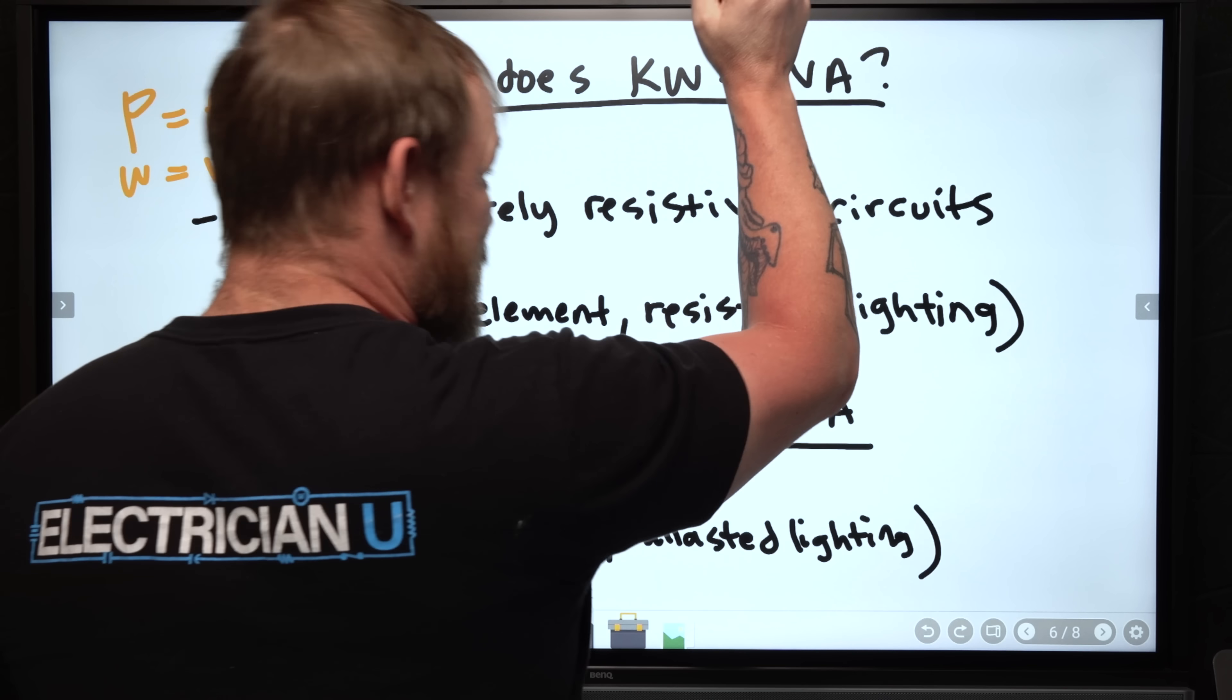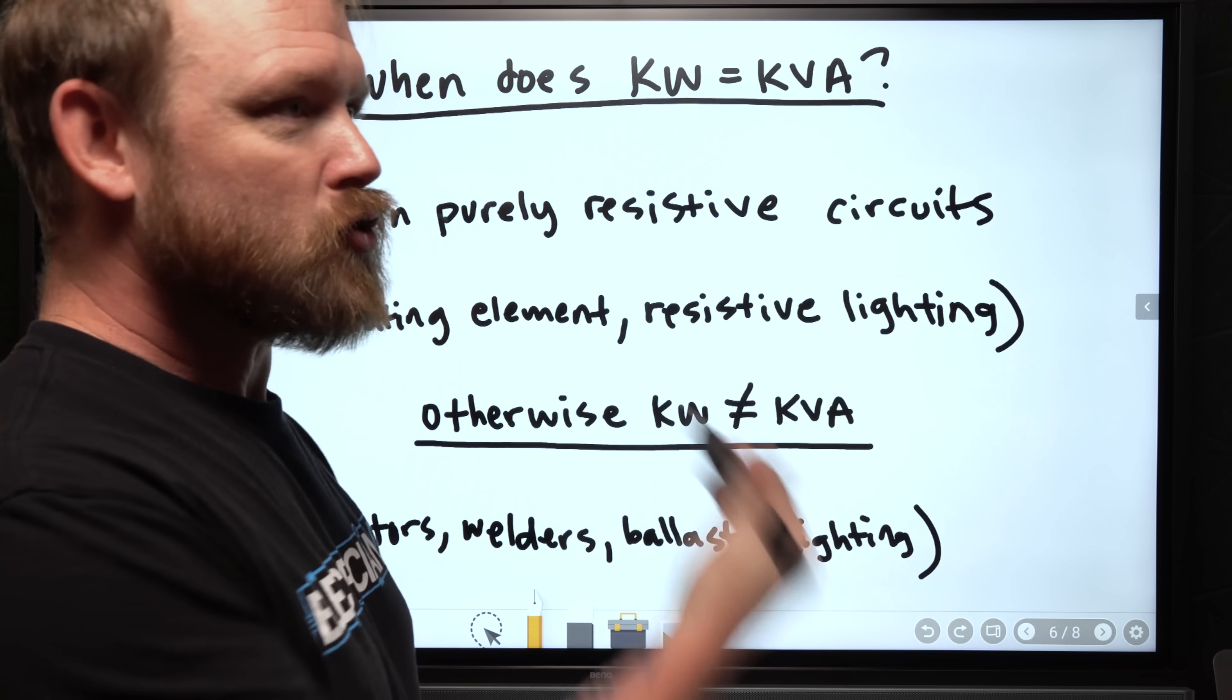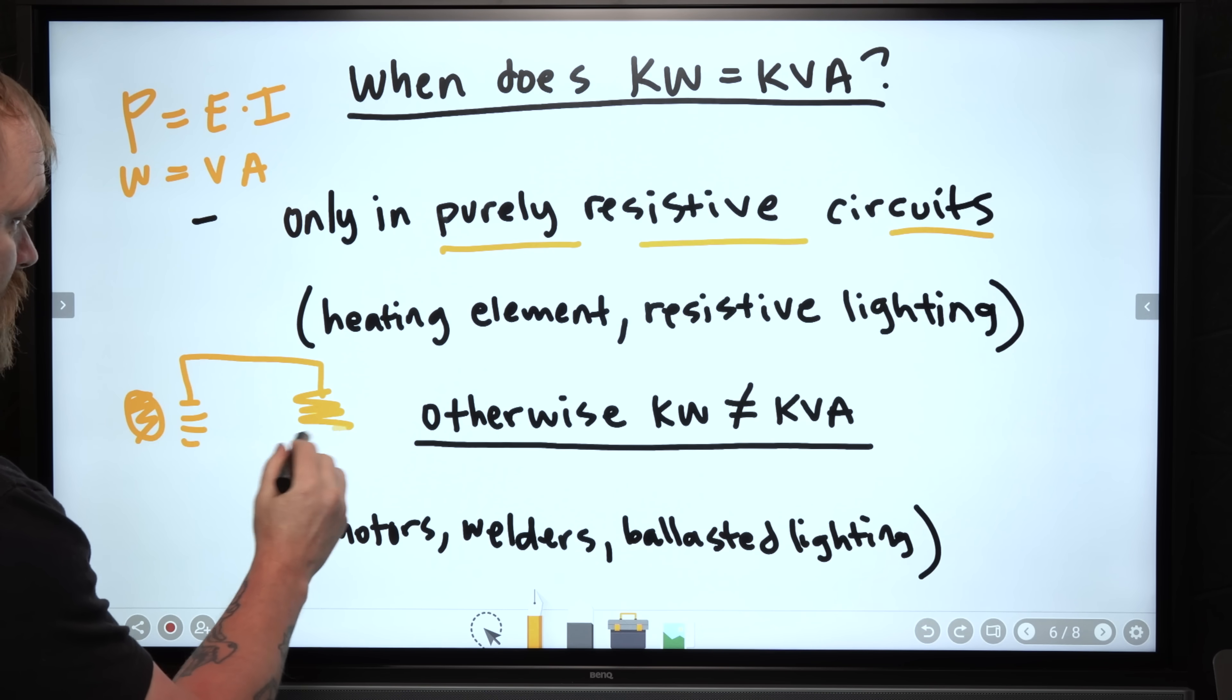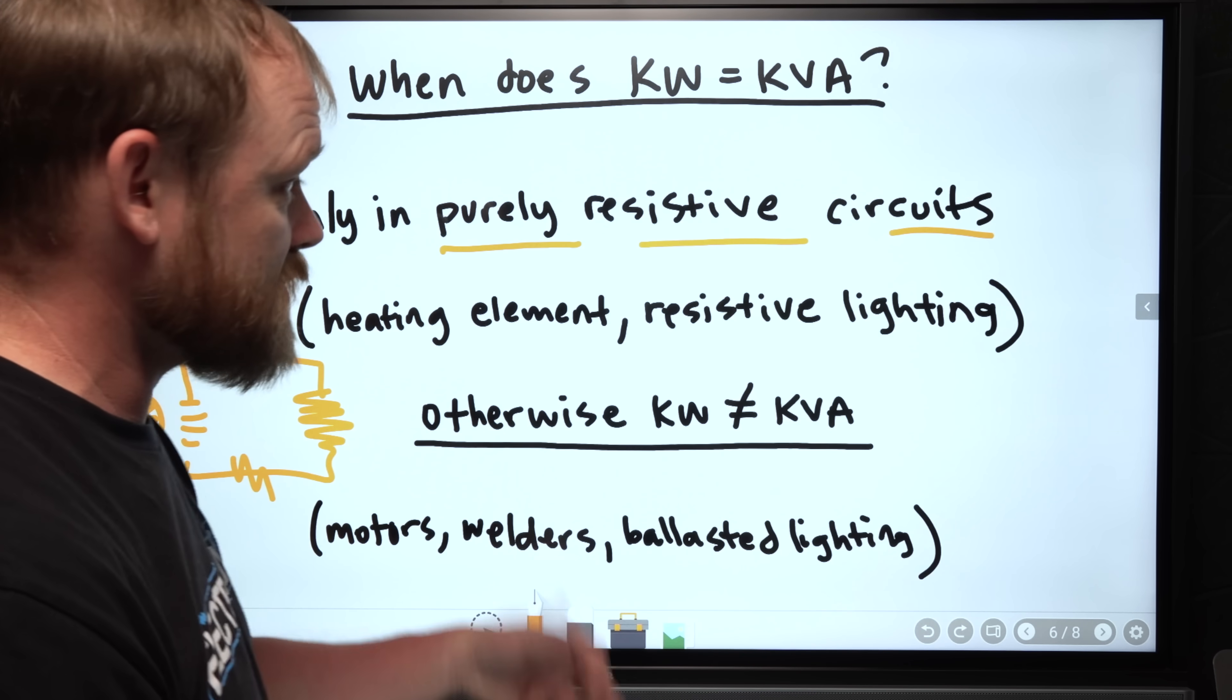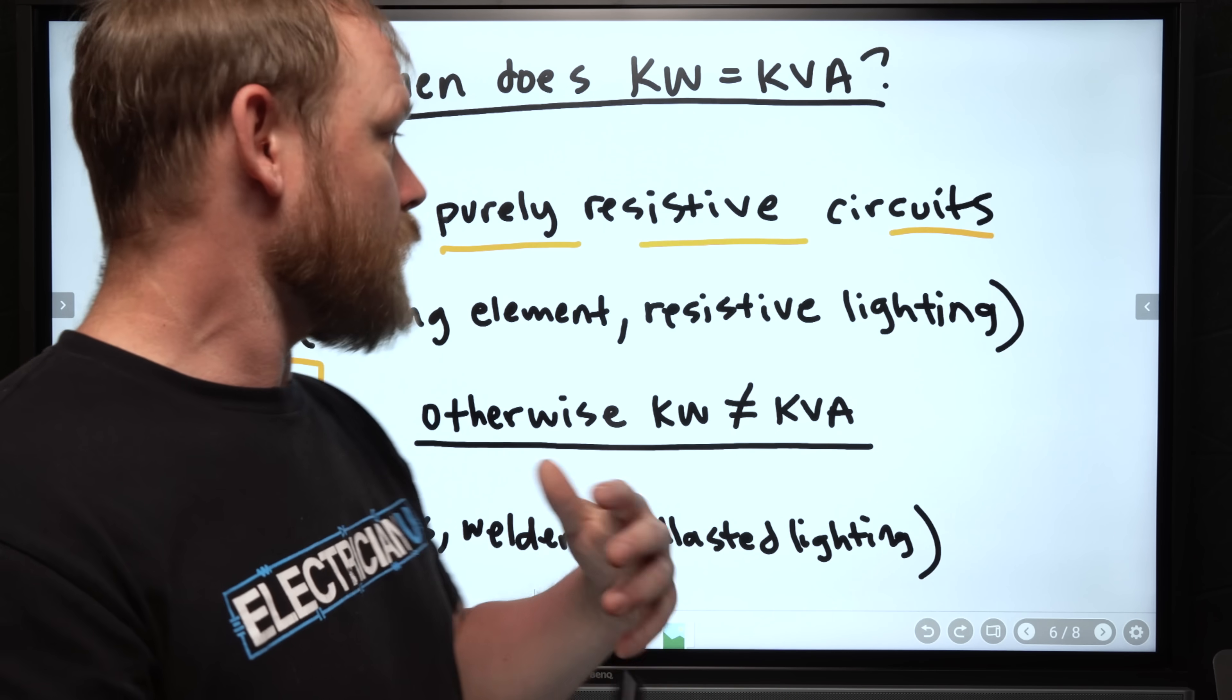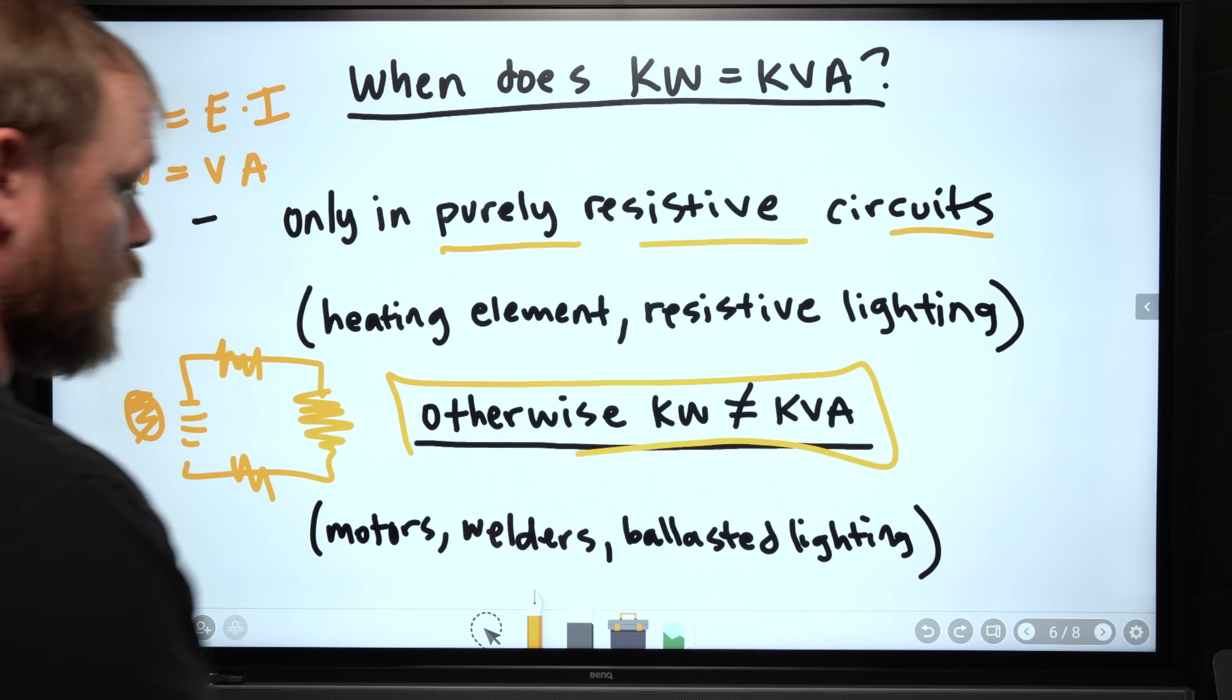So when does KW equal KVA? Really, if you're doing a power formula calculation, watts equals VA, a watt equals a volt amp. That's kind of the only time you're ever going to see it. It's just theoretically true. But it's only true in purely resistive circuits. And that is a circuit with a resistor or only several resistors, no inductors, no capacitors. It's purely resistive, only resistance. If you have a heating element, a heating element is going to be a large resistor. If you have resistive lighting, like incandescent lighting is essentially just a resistor. So it's possible that whatever is supplied to this thing, you're going to get an equal consumption out of it.